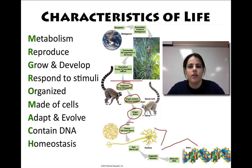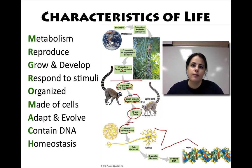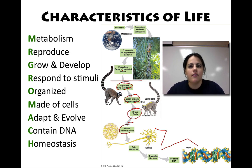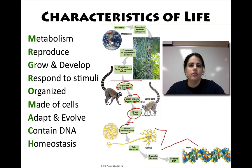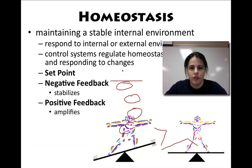And the last is homeostasis. Homeostasis is the process of maintaining a stable internal environment so everything is working as it should, and it's a balancing act to stay steady. Homeostasis is one I'm going to focus on in just a second. So these are the characteristics of life from metabolism to homeostasis, and you can remember them by saying Mr. Gromack.